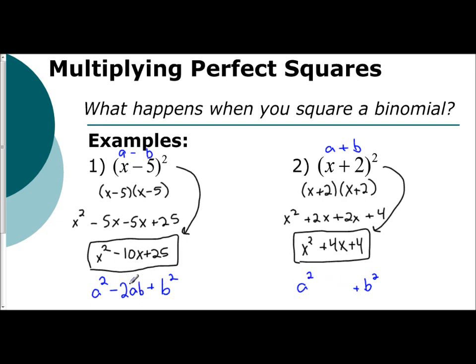Now this one said minus 2ab because I was subtracting. Now I'm adding. So I'm going to do plus. But let's see if this 2ab holds. a and b, you have x and 2, 2x. You do have two of them. So that is twice ab. And so the pattern when you square a binomial is the middle term is twice the product of the terms in the binomial.